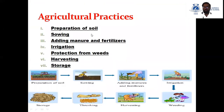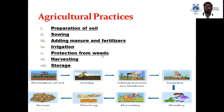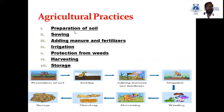For growing and cultivating crops, we need to follow some agricultural practices. There are seven agricultural practices: first is preparation of soil, second is sowing, then adding manure and fertilizers, irrigation, protection from weeds, harvesting, and storage. In today's lecture, we will learn the first two agricultural practices: preparation of soil and sowing.